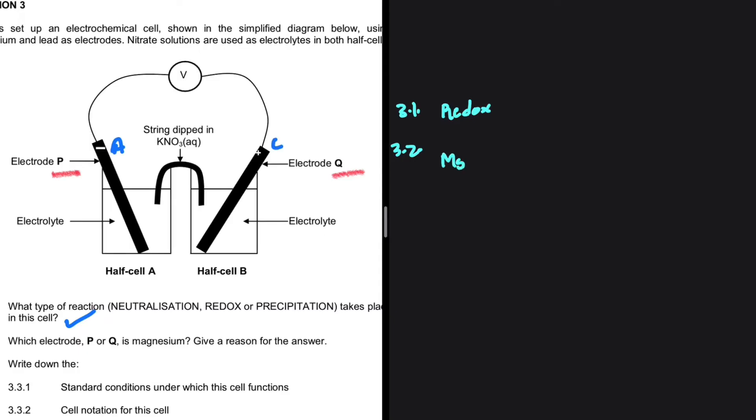Between magnesium and lead, which one is undergoing oxidation? Which one will be our anode? We need to go to our table of reduction potentials and determine which one is a stronger reducing agent.